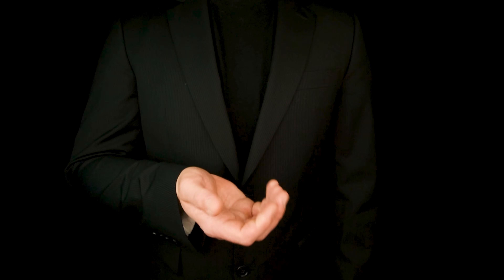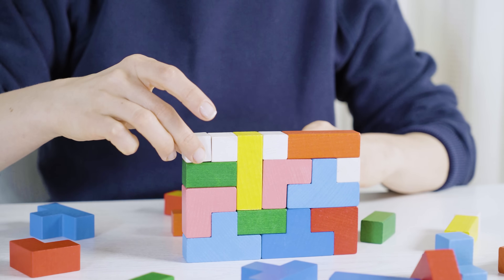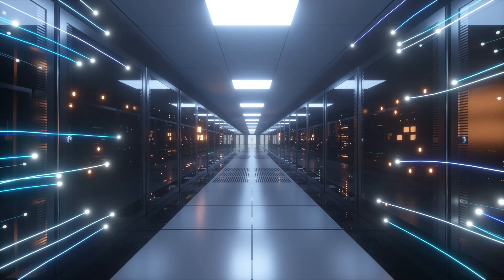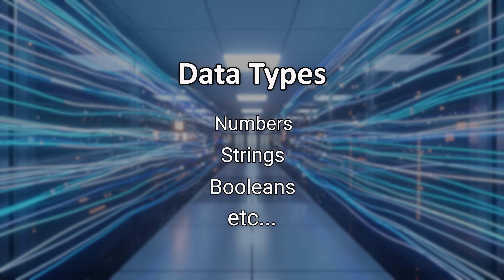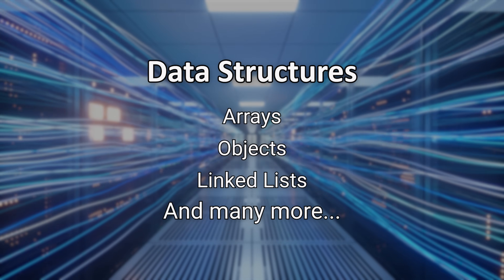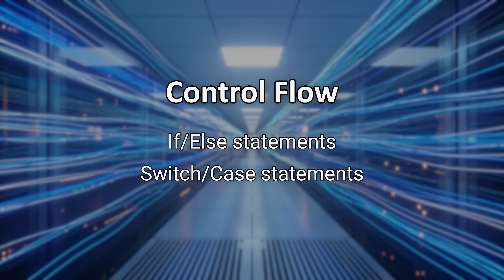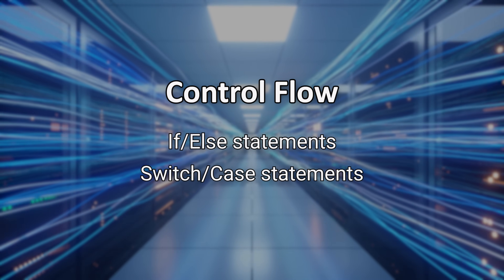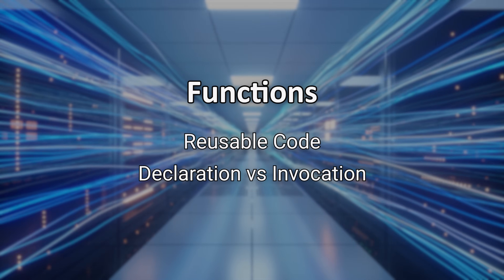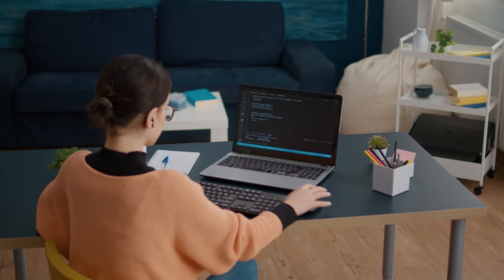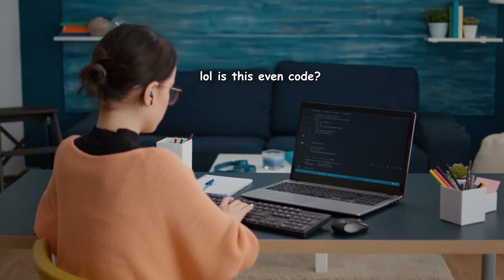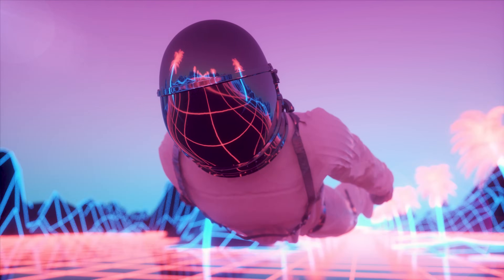No matter what language you chose in step one, the basics are almost always the same in every language. You're going to want to start with the following concepts: data types, which includes your numbers, strings, booleans, etc.; data structures, which has arrays, objects, linked lists, and many more; control flow, which covers your basic conditional if-else statements; and functions, where you learn how to create reusable code. If you pick these concepts up in one language, you can always use them in another — that's what makes learning the basics so effective. Your fundamentals will take you wherever you want to go.